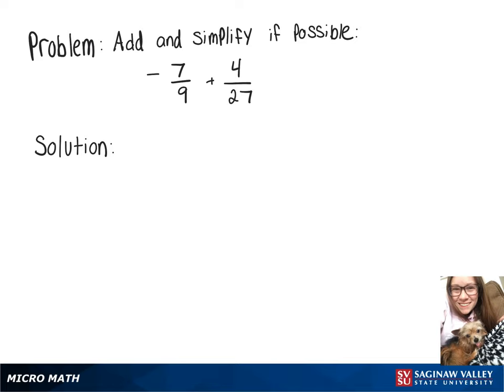We're going to do negative 7 over 9 plus 4 over 27. In order to add those, we need to have a common denominator.